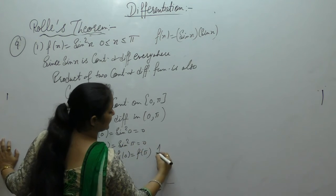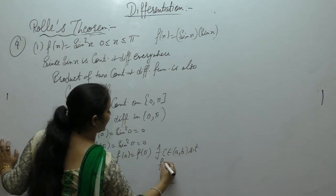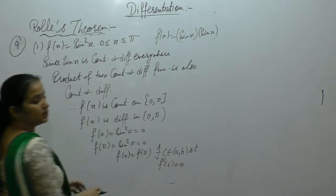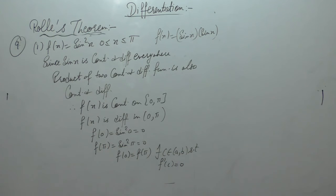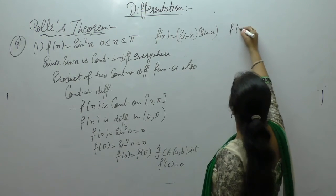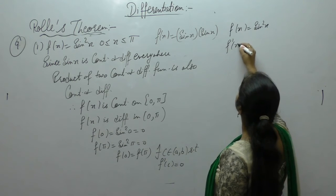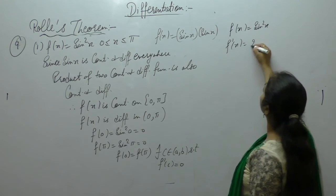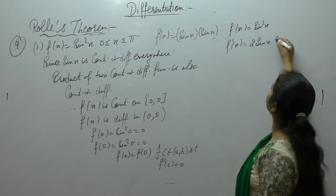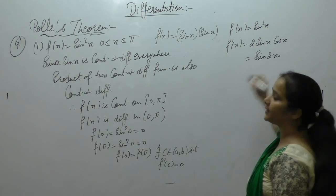Therefore there exists c in (0, π) such that f'(c) = 0. Now f'(x) = 2 sin x cos x = sin 2x. Setting f'(c) = 0: sin 2c = 0.